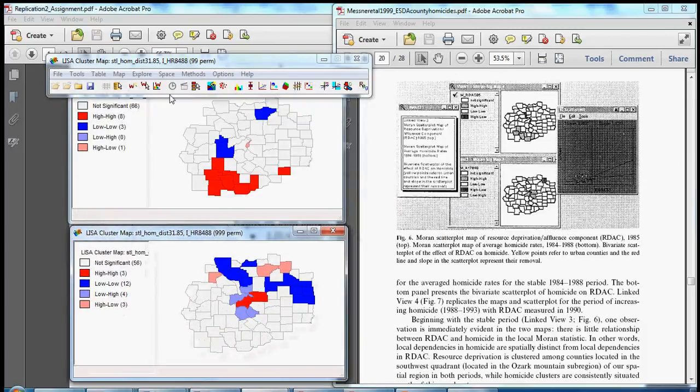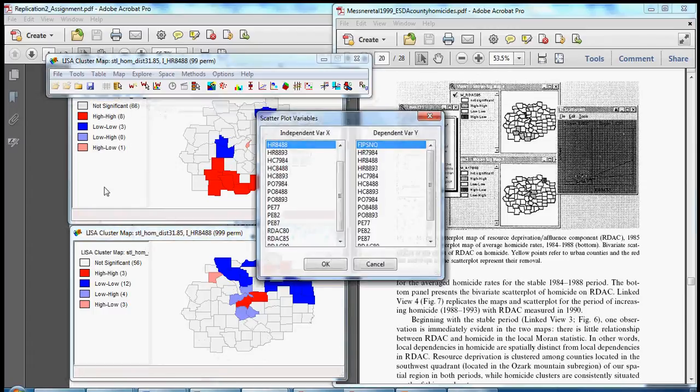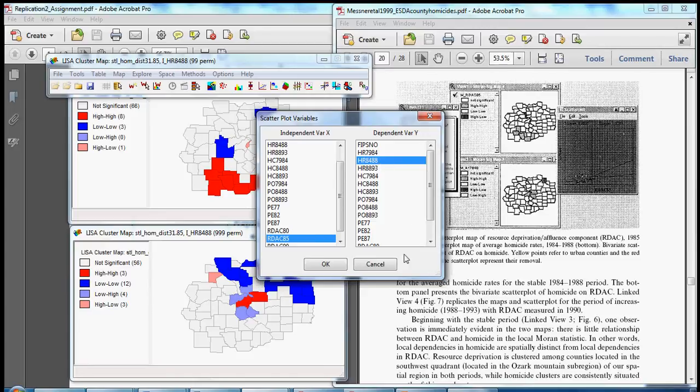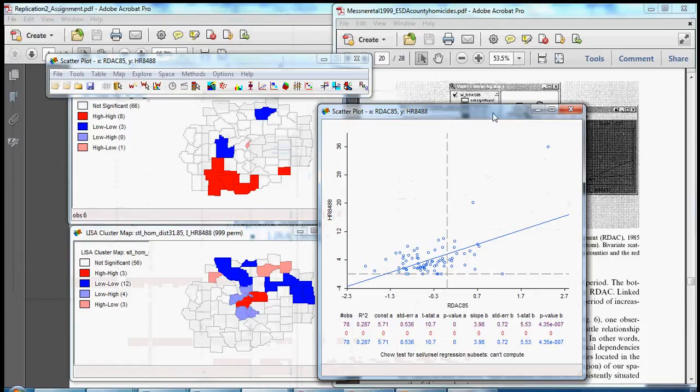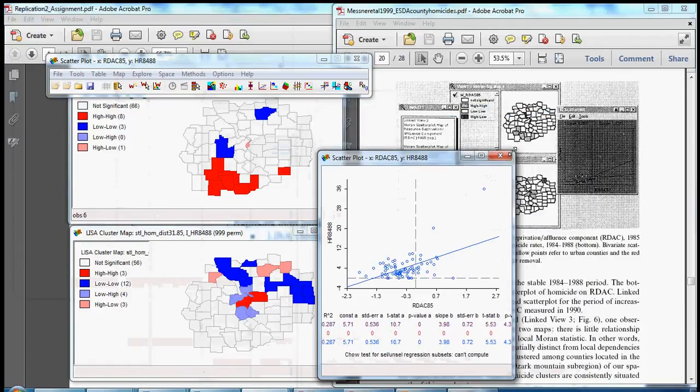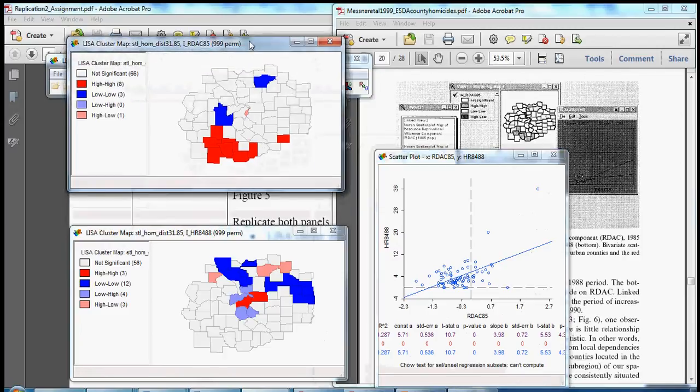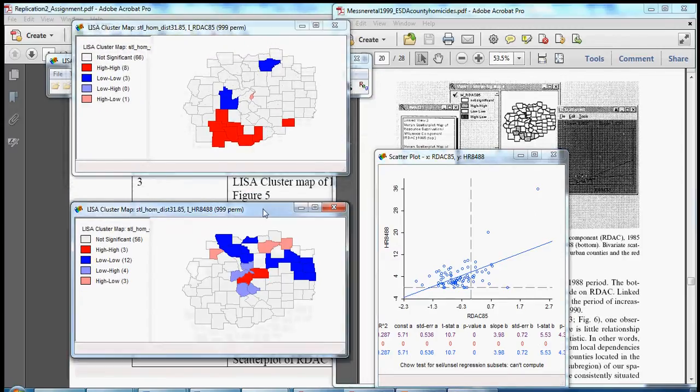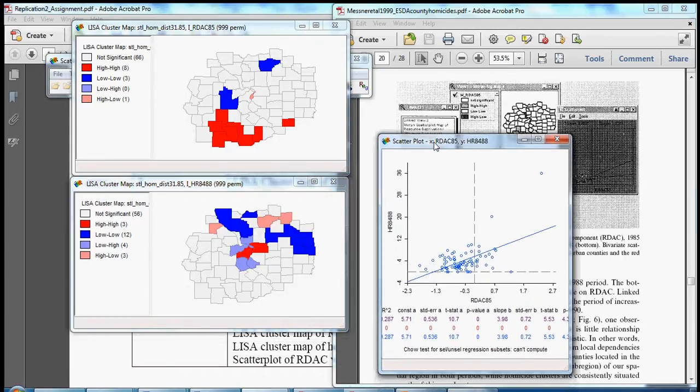And then if we go to explore scatter plot on the x-axis we can put resource deprivation affluence 1985. And we can put homicide rates 84-88 on the y-axis. Let's try to arrange these so that we can see everything at the same time and still keep everything safely within the video frame. I'm not exactly sure when I'm recording this where the boundaries of that frame are.